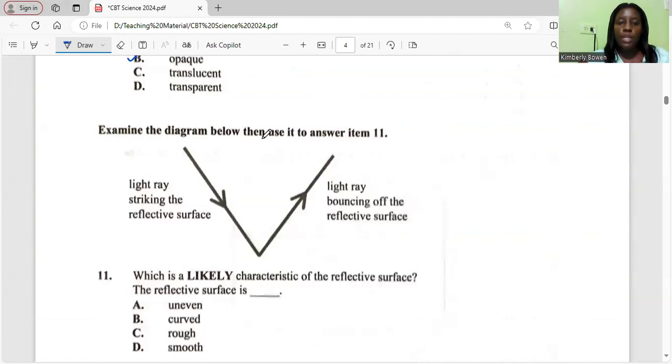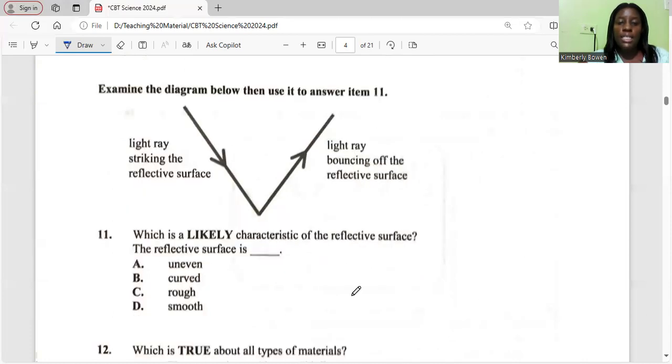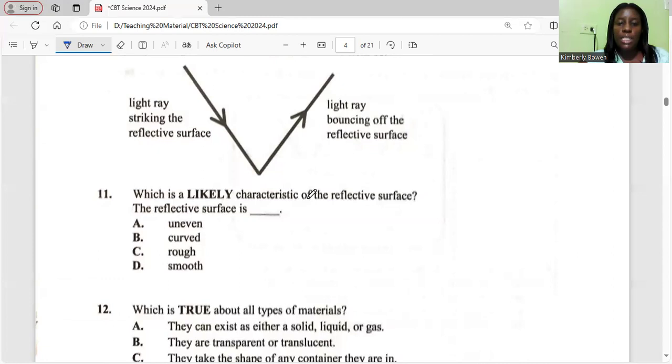Examine the diagram below then use it to answer item 11. Light rays striking the reflective surface and light rays bouncing off the reflective surface. Which is the likely characteristic of the reflective surface? The reflective surface is uneven, curved, rough, or smooth. The correct answer is smooth. Reflective surfaces are usually smooth, such as glass. It's usually smooth.